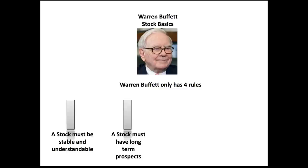The second rule is that a stock must have a long-term prospect. He's not investing in a company that sells TV antennas. He looks at a company and asks: is this company going to be around 30 to 40 years from now, and is their product still going to be needed? He likes to buy a company and hold it because the growth happens in the market price and he never pays taxes on that growth. The long-term prospect is really wrapped up in the tax advantage, and that's the second rule he always follows.